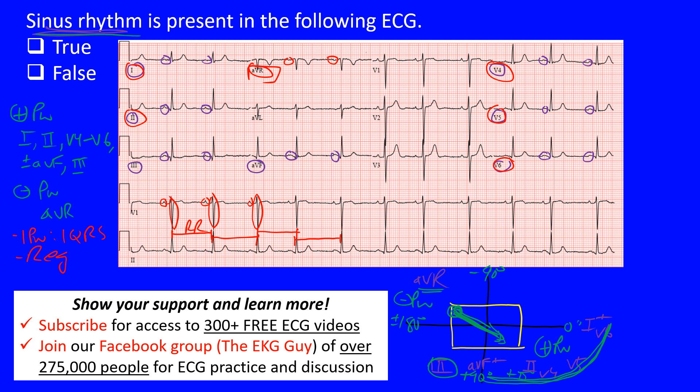With a first-degree AV block, sinus rhythm can still be present. You can also have AV dissociation — as long as the rhythm originates from the sinus node, we still say sinus rhythm is present. That's why the 1:1 ratio and regularity criteria are highlighted in red: don't rely on them too heavily. Based on all of this, sinus rhythm is certainly present in this ECG.